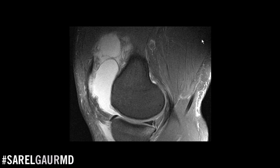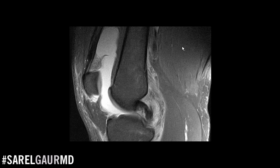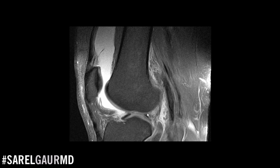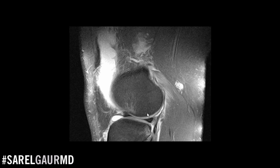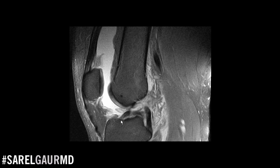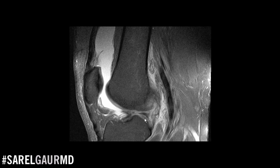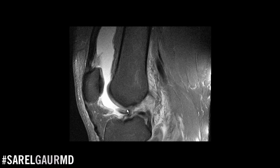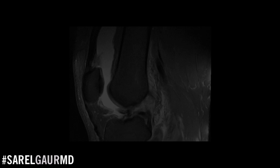This is a patient that presented with pain. As I scroll through, we can see the PCL but just take a look — you cannot see the ACL. Scrolling back into the middle, you can almost see a piece of the ACL here, but basically there's a complete disruption of the ligament. That normal coursing fiber at 45 degrees is just not there. This is an ACL tear. In fact, you can see this folded-up, crinkly thing — that is probably the ACL, completely torn and hanging free inside the joint.